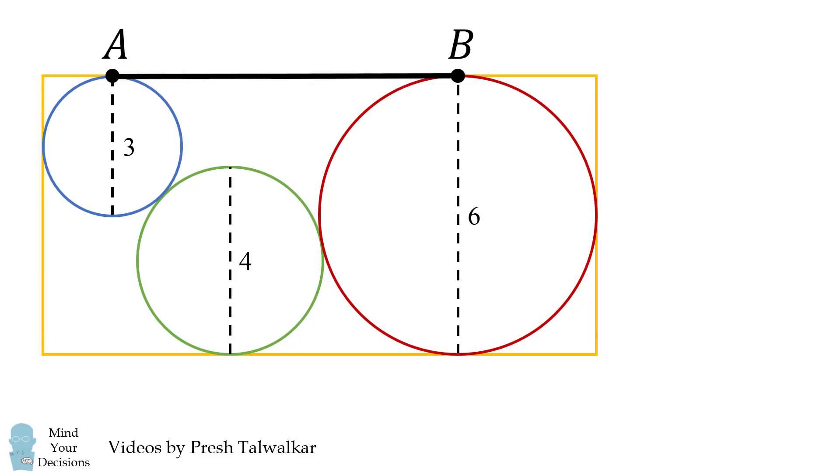So how can we solve this problem? Well first let's draw the center of each circle. Next we'll consider the radius of each circle. The blue circle has a radius of 1.5, the green circle has a radius of 2, and the red circle has a radius of 3.